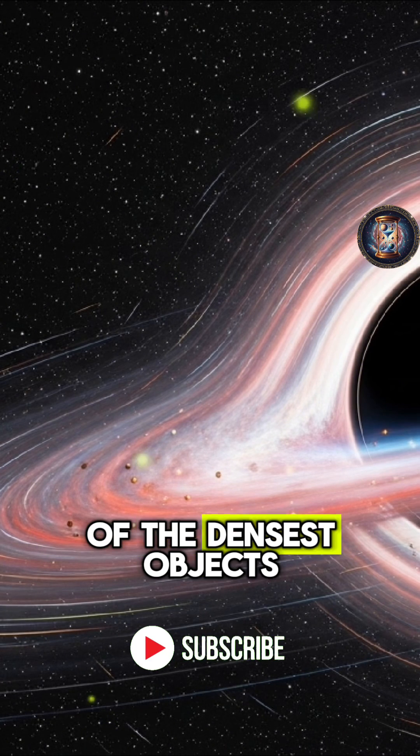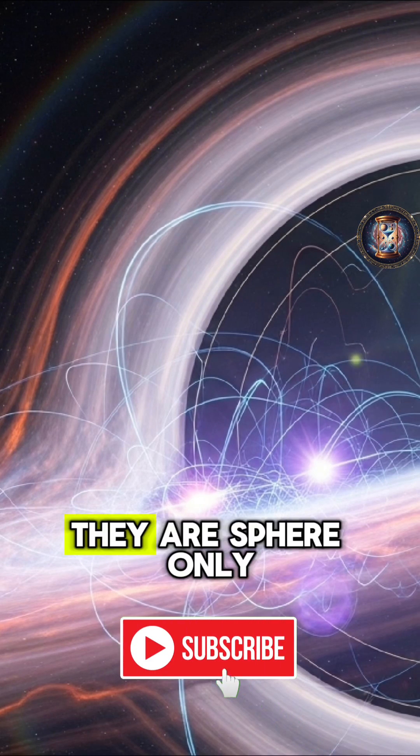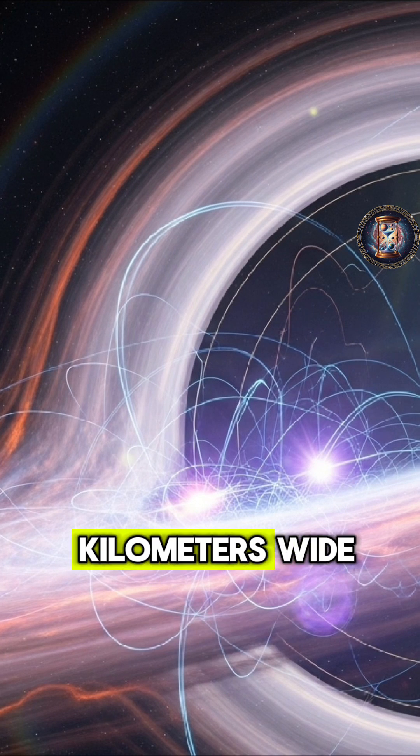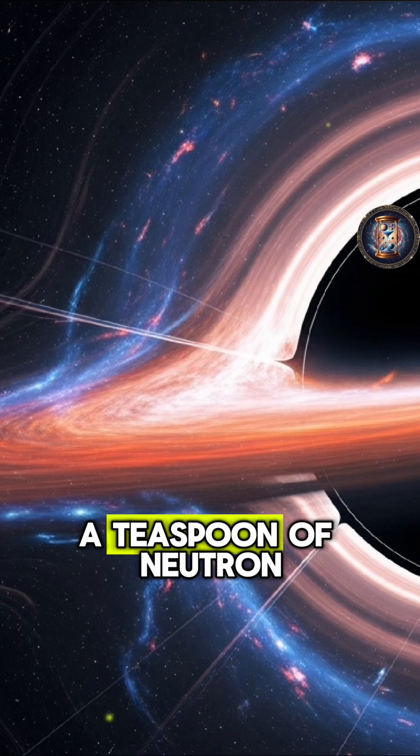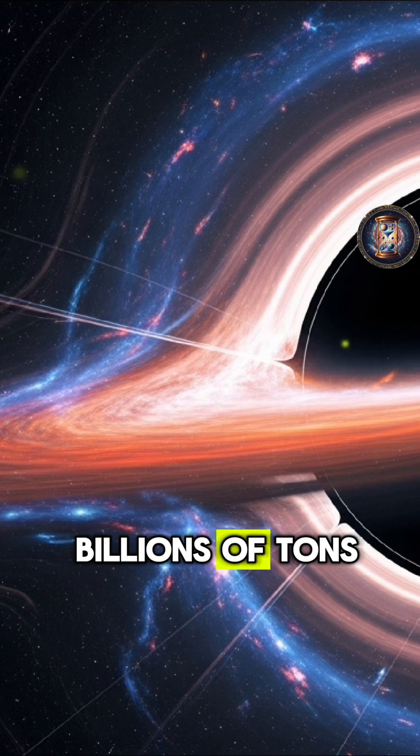Neutron stars are one of the densest objects in the universe. They are spheres only a few tens of kilometers wide, but many times heavier than our Sun. A teaspoon of neutron star matter can weigh billions of tons.